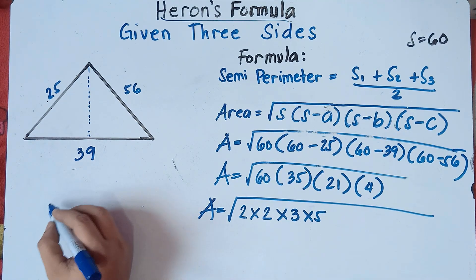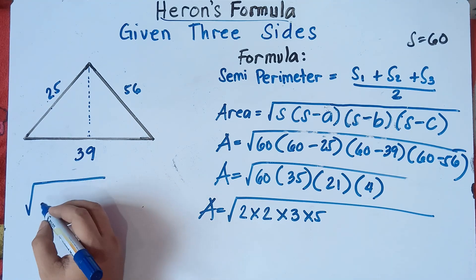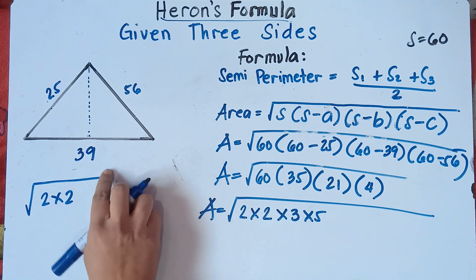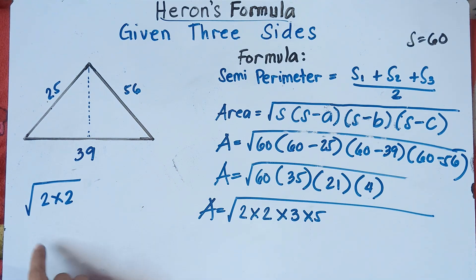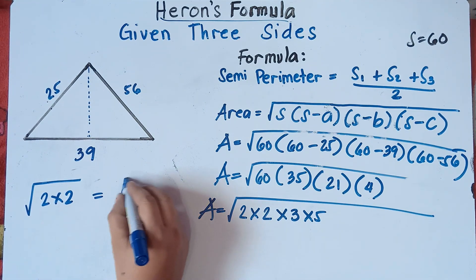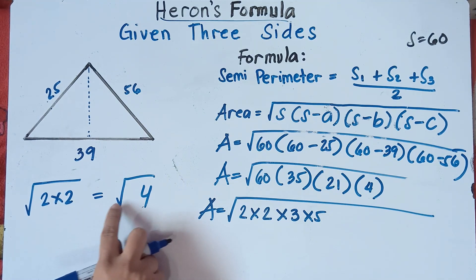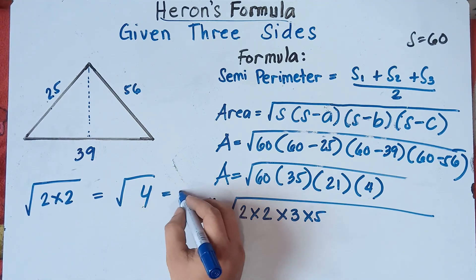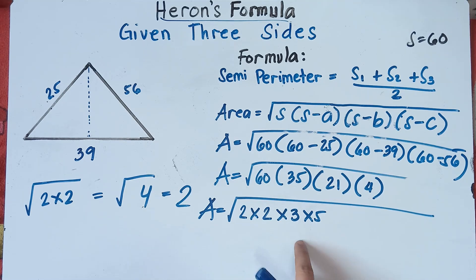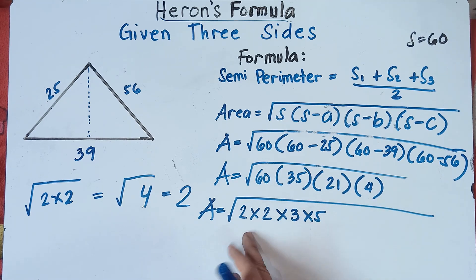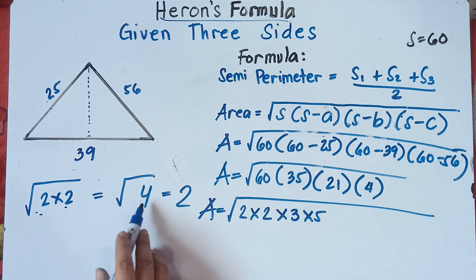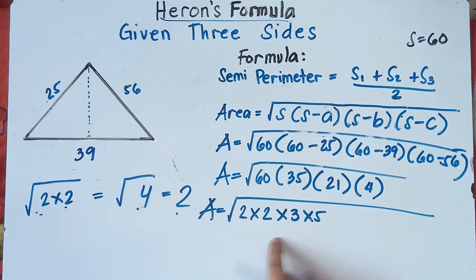This is important: in square root, if we write 2 times 2, that's the square root of 4, which equals 2. So we need to have at least two pairs so that we can remove them from under the radical sign — the square root of 2 times 2 equals the square root of 4, which is 2. We need pairs to cancel them out and place the result outside the radical sign.